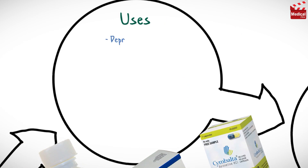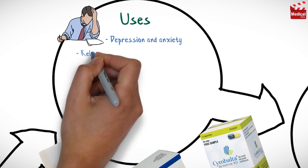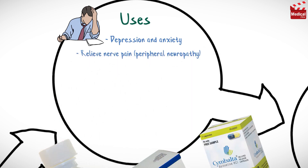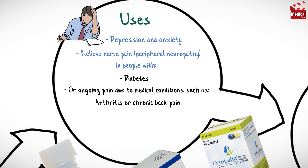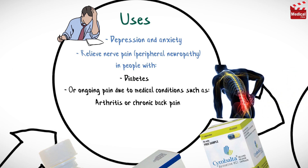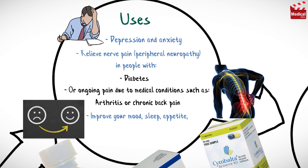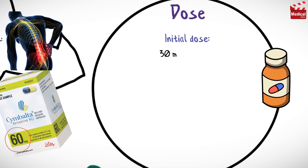Duloxetine is used in the treatment of depression and anxiety. It is also used to help relieve nerve pain and peripheral neuropathy in people with diabetes, or ongoing pain due to medical conditions such as arthritis or chronic back pain. It may improve mood, sleep, appetite, and energy level, and decrease nervousness.